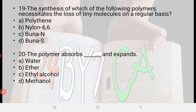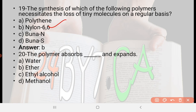Next: The synthesis of which of the following polymers necessitates the loss of small molecules on a regular basis? Option A: polythene, option B: nylon 6-6, option C: buna N, option D: buna S. The right answer is option B, nylon 6-6.